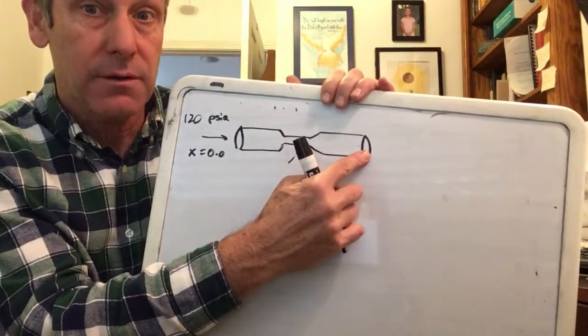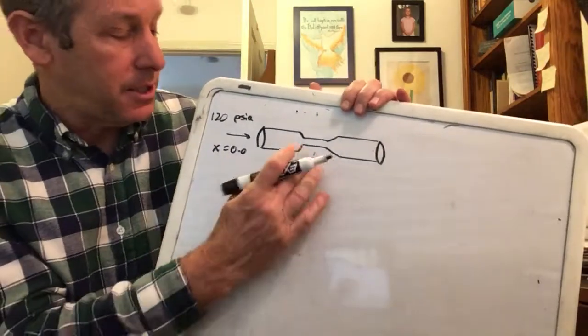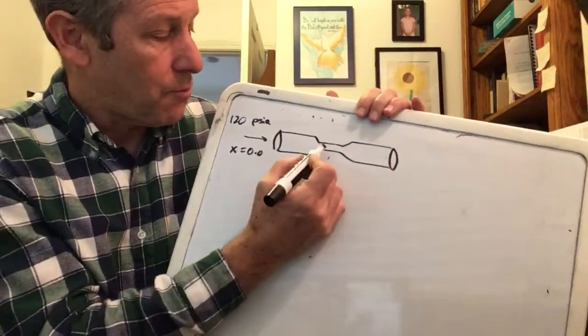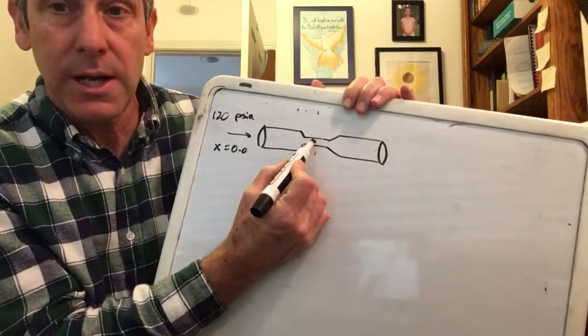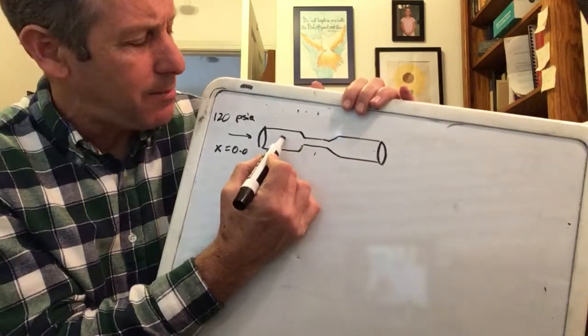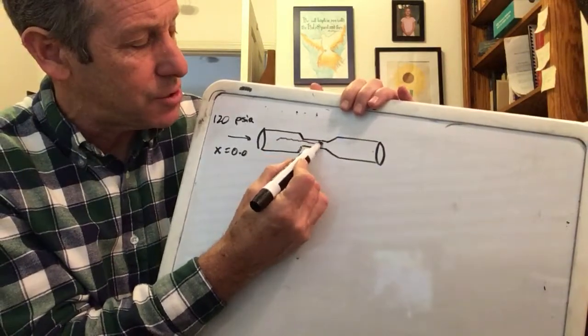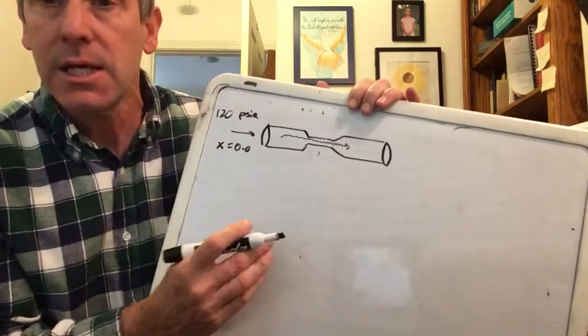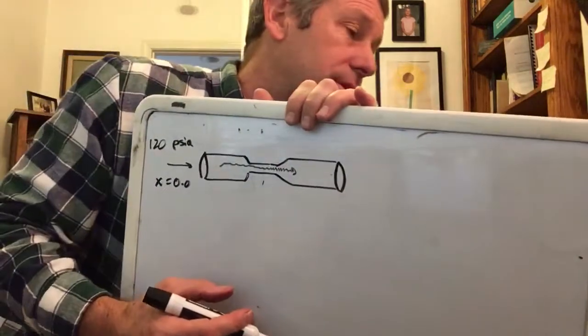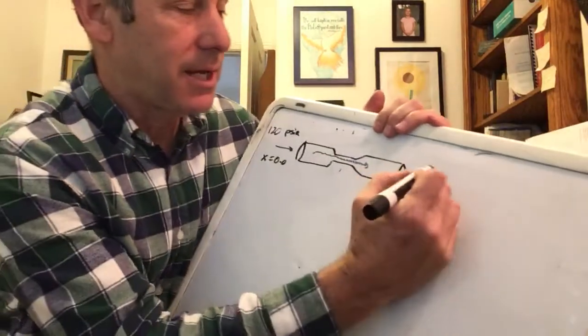You're going to get something over here that can then go into your refrigerator and cool things off. Outlet conditions: throttling valve, by the way notice I drew it a different way. This is a restriction, same idea. We have a restriction so that when the refrigerant goes through it loses pressure. We're going to do an outlet pressure of 35 psia.